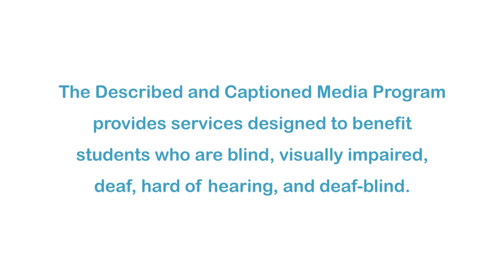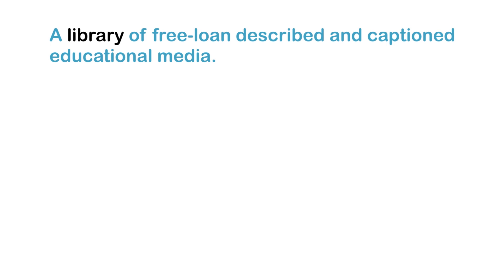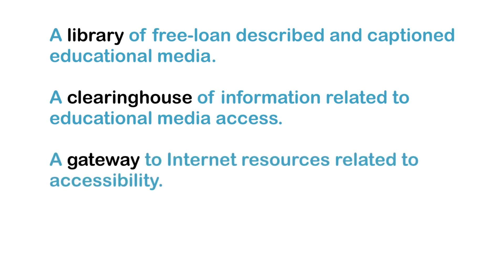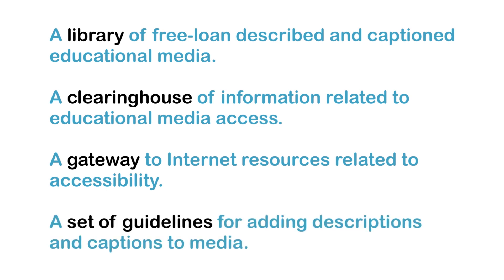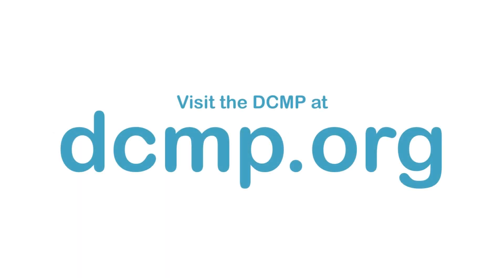The Described and Captioned Media Program provides services designed to benefit students who are blind, visually impaired, deaf, hard of hearing, and deafblind. These services include a library of free loan described and captioned educational media, a clearinghouse of information related to educational media access, a gateway to Internet resources related to accessibility, and a set of guidelines for adding descriptions and captions to media. There are no user registration or service fees. Visit the DCMP at dcmp.org.